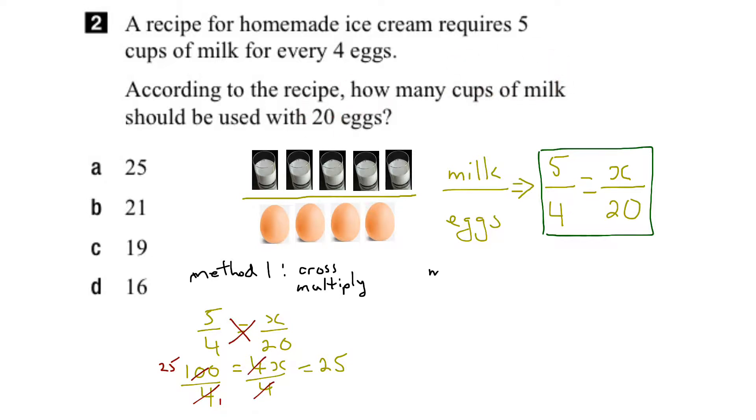Another method you could use in this case is the horizontal method. And what this means is if we put our proportion down here again, and ask ourselves, what did we do to 4 to get to 20? Well, what we did is we multiplied by 5. So whatever we do to the bottom, we should do to the top.